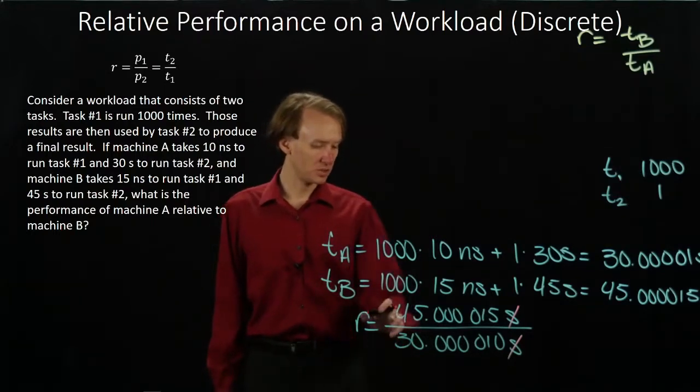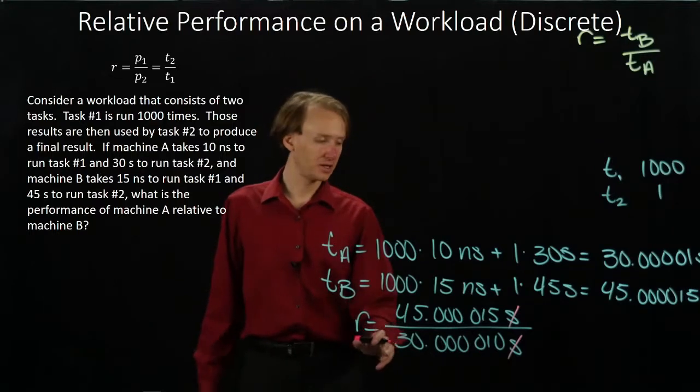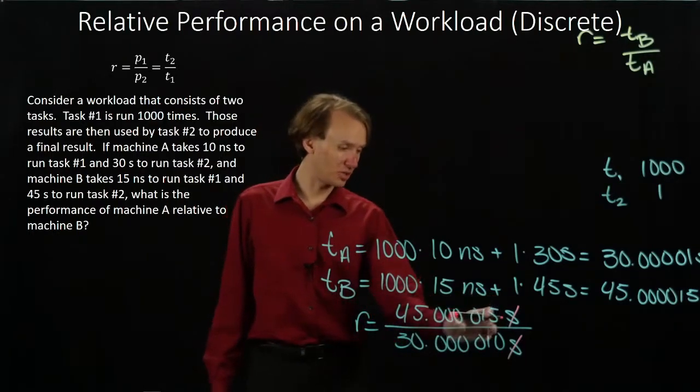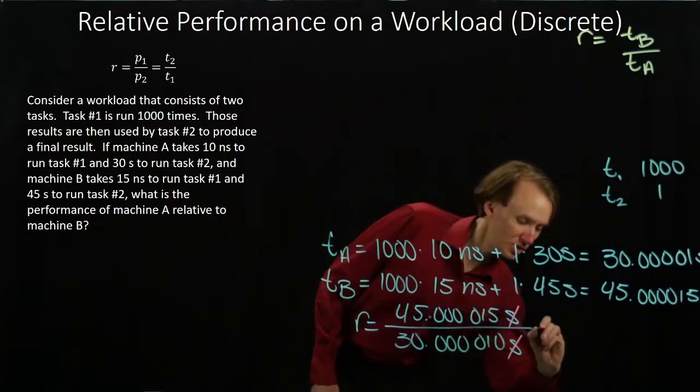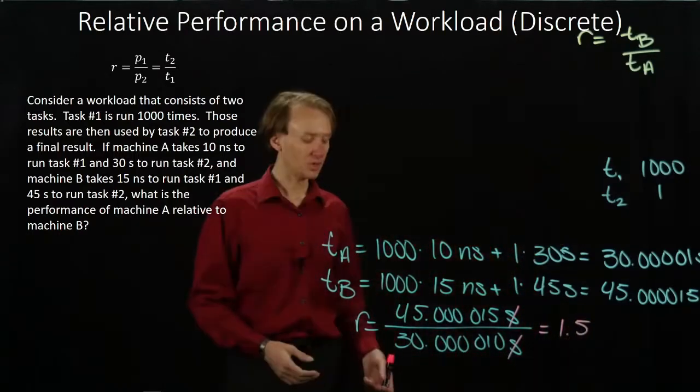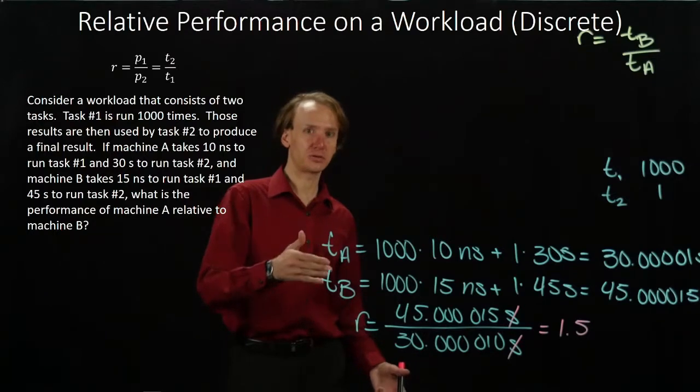And for the rest of this, well, my 45 looks like about one and a half times of my 30. And it turns out the 15 microseconds is also one and a half times the 10 microseconds. So this reduces nicely to 1.5, which tells me that machine A is 1.5 times faster than machine B.